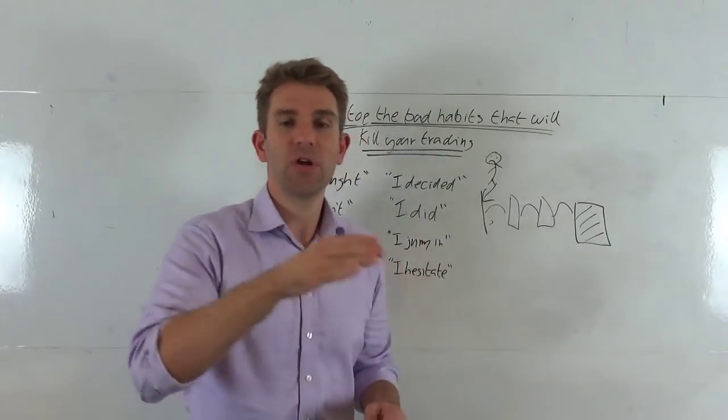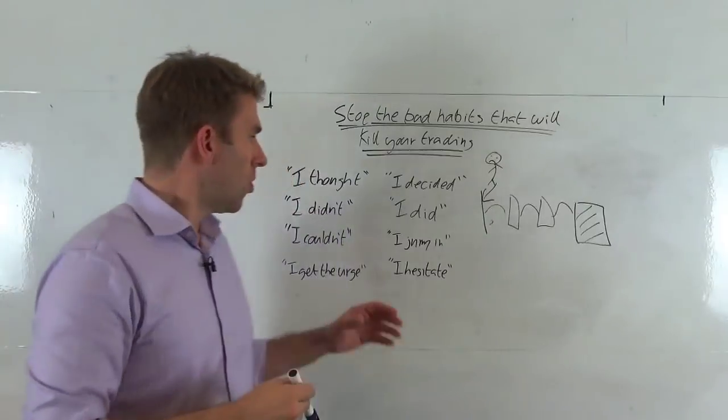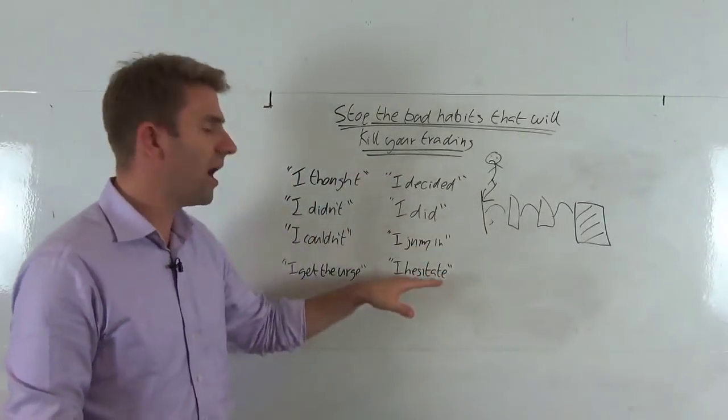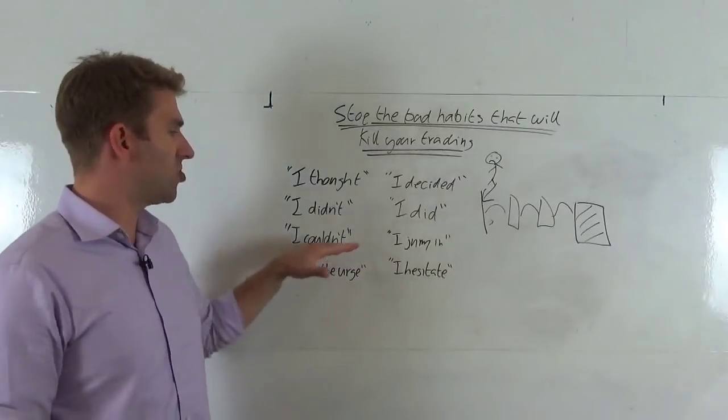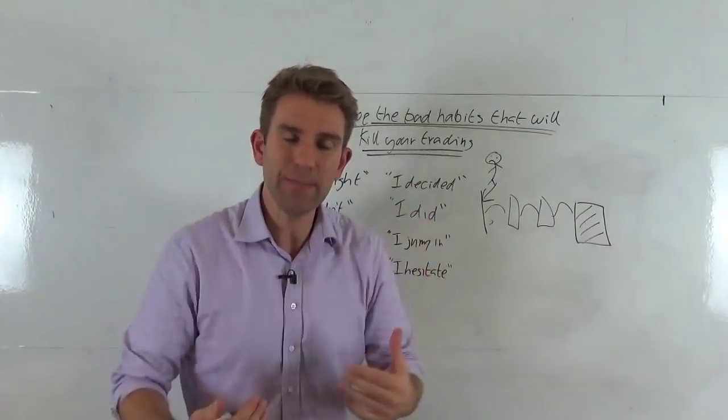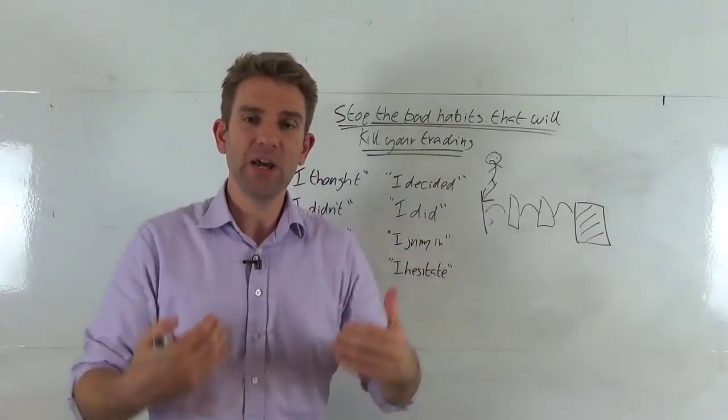Sometimes, you've got to go backwards to go forwards. So when you have these discretionary elements like, oh, I jump in too early, I hesitate, I get the urge, I couldn't do it, I did do it, I decided, I thought. These are all things that you can eliminate from your trading straight away.